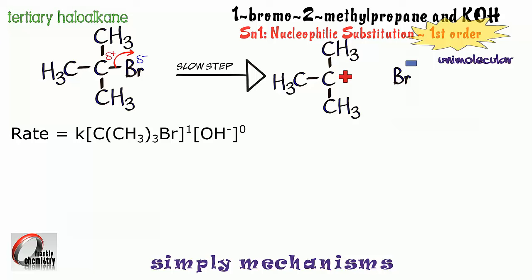You see that the concentration of hydroxide ions is to the power of 0, because it's not involved in the slow step, and anything to the power of 0 is 1, so we can remove that part from the expression. The rate equation then is simply equals k, the rate constant, times the concentration of the tertiary haloalkane molecule to the power of 1.